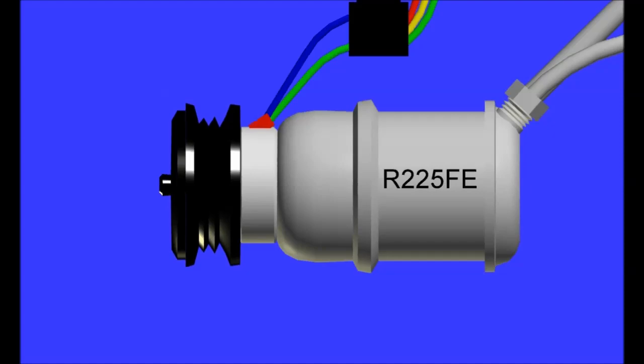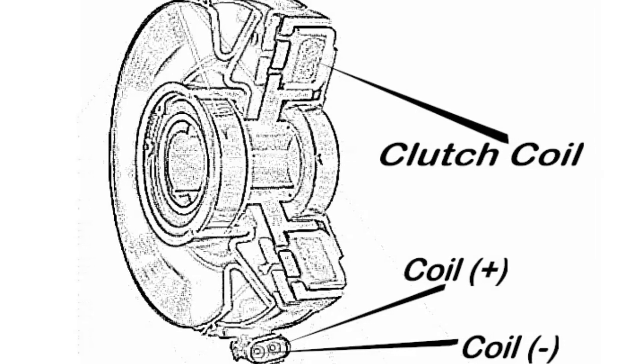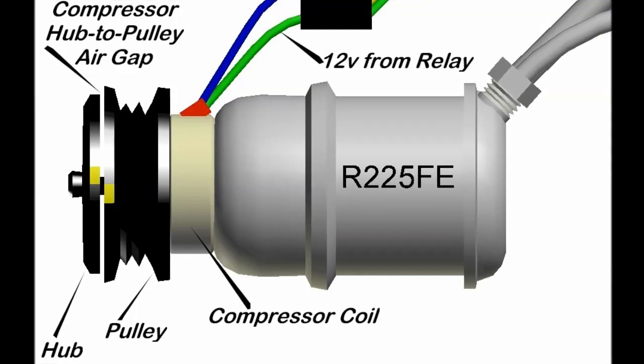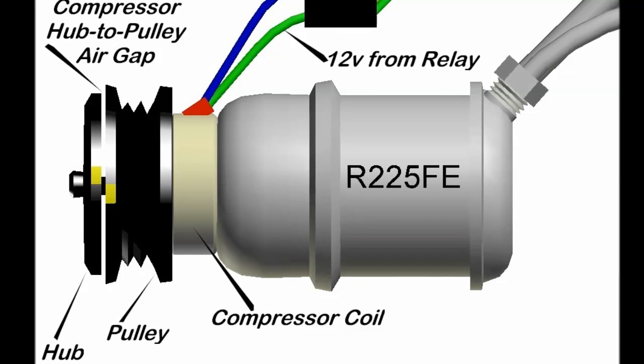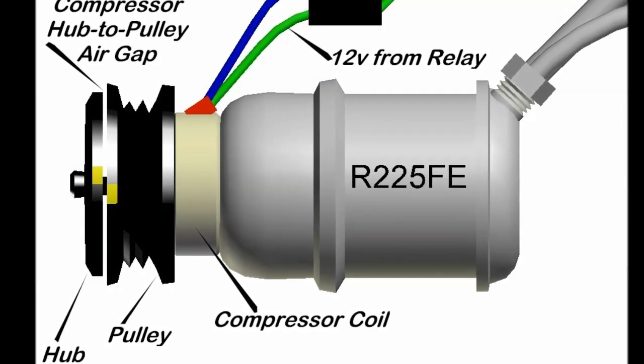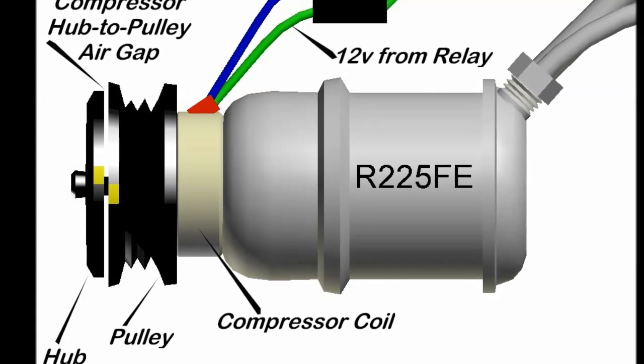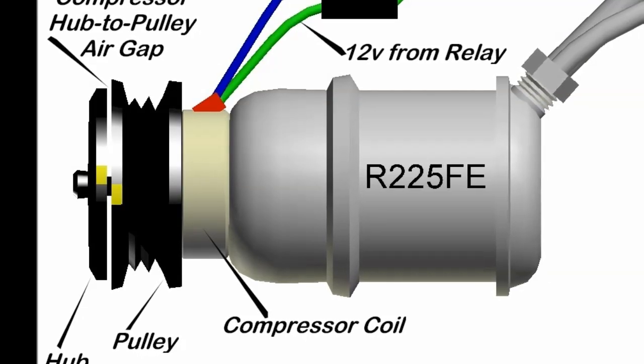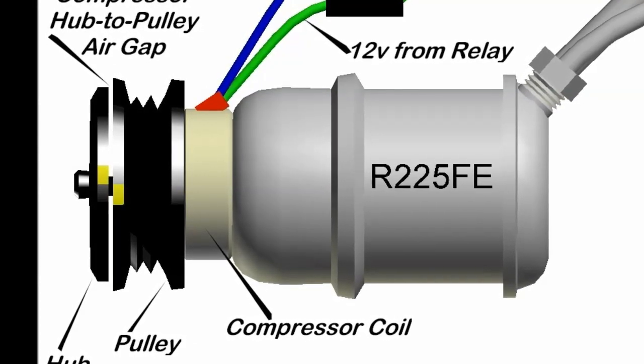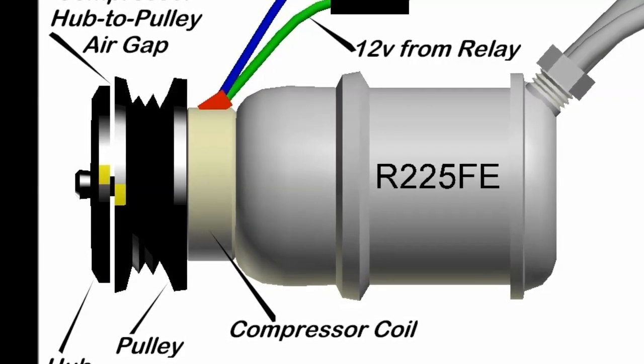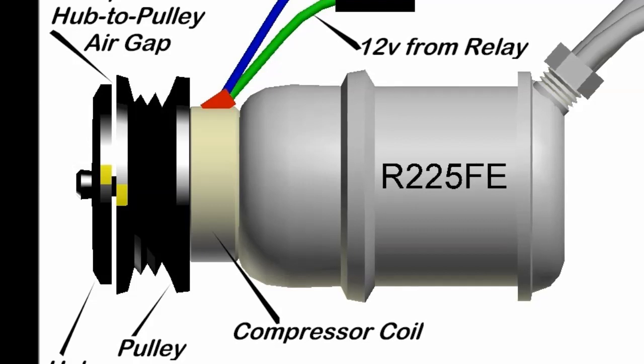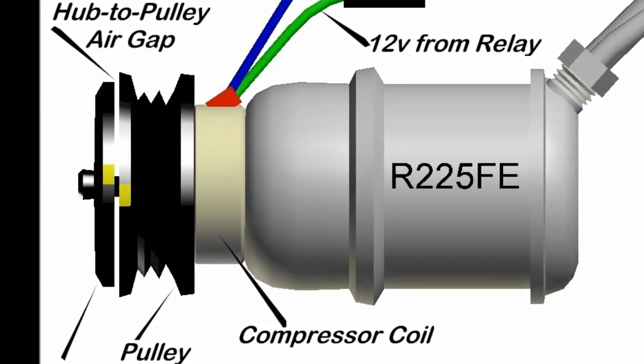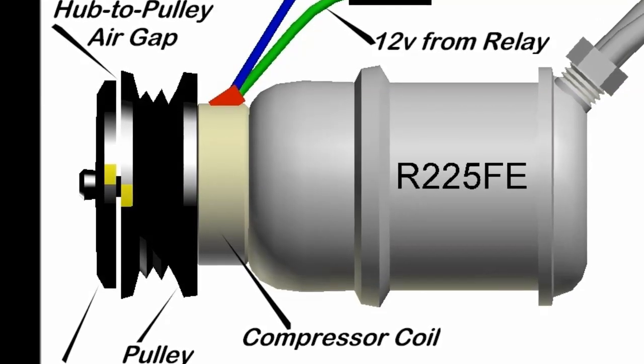Now on screen here, you can see something called the compressor hub to pulley air gap. This is how you adjust the compressor clutch. You have the pulley which is driven by the belt, the hub at the tip of the compressor, and the compressor coil further back, which is controlled by the relay, which is controlled by the ECM. It provides power and then the ECM provides the ground on the other side. The relay only provides the power, the ground is actuated by the ECM also.